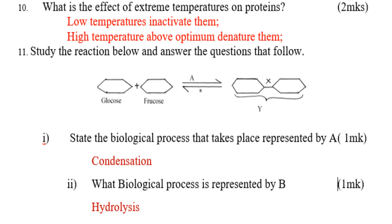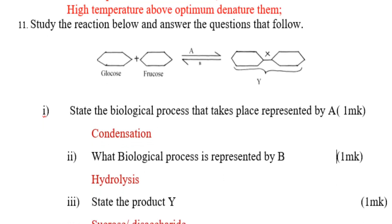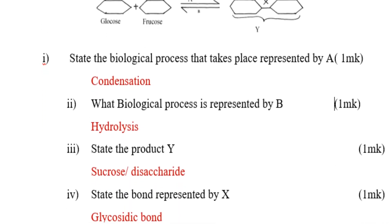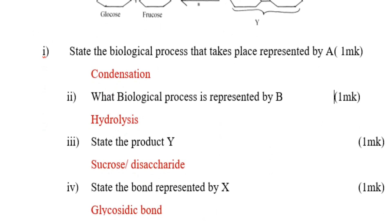Question number eleven: study the reaction below and answer the questions. State the biological process represented by A — that is condensation. What biological process is represented by B — that is hydrolysis. State the product Y — that is sucrose. The compound represented by X is a glycosidic bond.